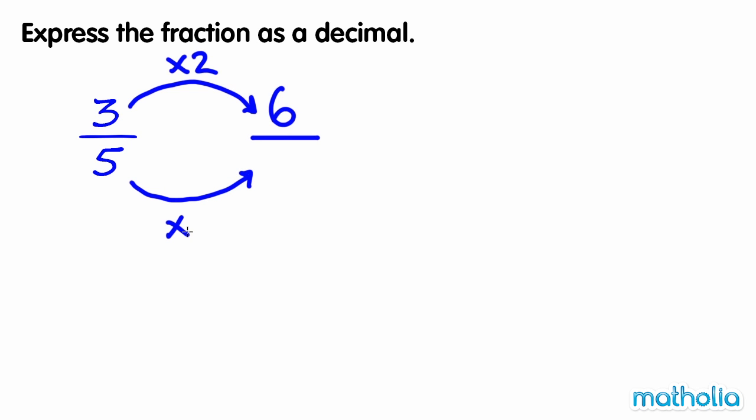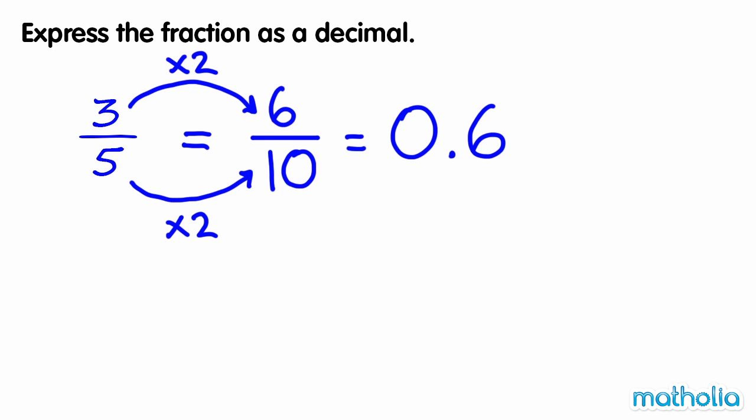3 fifths is equal to 6 tenths, which we can write as the decimal 0.6. So 3 fifths is equal to 0.6.